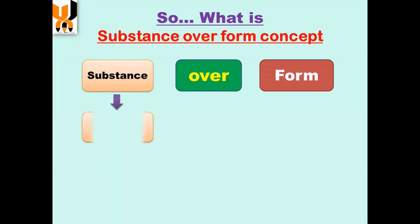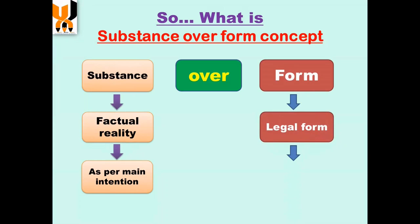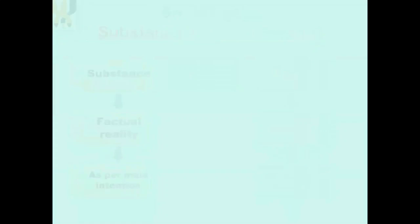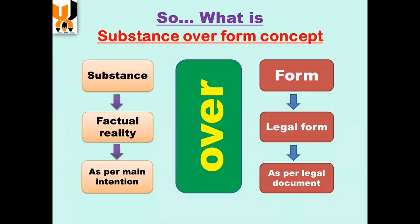Now that we see how the substance over form is itself. It is called a substance over form. It is called the factual reality, and the main intention of the transaction, as well as a real transaction. It is called the legal form and legal form. In accounting, we have given this substance as a legal form in the form of the accounting record.